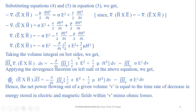Taking the volume integral on both sides, we get: volume integral of ∇ · (E̅ × H̅) dv = −∂/∂t volume integral of (1/2 ε E² + 1/2 μ H²) dv − volume integral of σ E² dv. Applying the divergence theorem on the left side, we get: closed surface integral of E̅ × H̅ · dS̅ = −∂/∂t volume integral of (1/2 ε E² + 1/2 μ H²) dv − volume integral of σ E² dv.